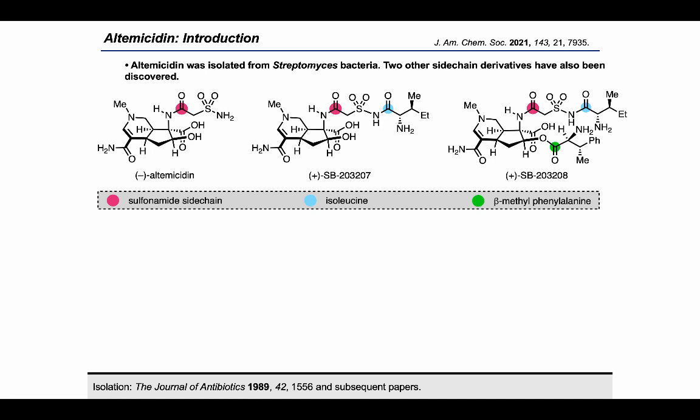Following this initial report, researchers at SmithKline Beecham Pharmaceuticals also identified the related alkaloids SB-203207 and SB-203208 while searching for novel microbial tRNA synthetase inhibitors. These compounds are closely related to altemicidin and are acylated with amino acid and amino acid-derived side chains. In SB-203207, the sulfonamide side chain in pink is acylated with isoleucine illustrated here in blue, and SB-203208 contains additional acylation on the secondary alcohol with beta-methylphenylalanine illustrated here in green.